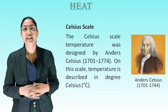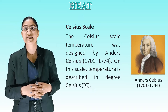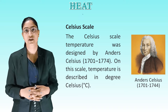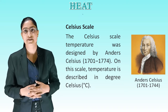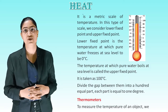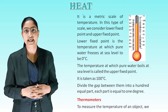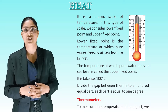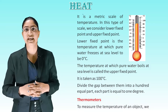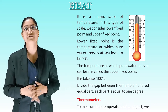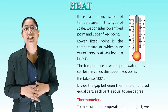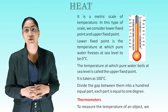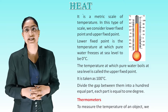Celsius scale. The Celsius scale was designed by Anders Celsius. On this scale, temperature is described in degree Celsius. It is a metric scale of temperature. In this scale, we consider a lower fixed point and an upper fixed point. The lower fixed point is 0°C — the temperature at which pure water freezes at sea level. The upper fixed point is 100°C — the temperature at which pure water boils at sea level. The gap between them is divided into 100 equal parts, and each part equals 1 degree.